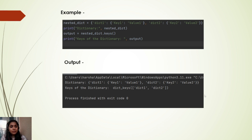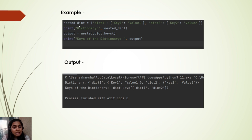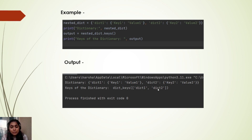We have another example: a dictionary of dictionaries — a nested dictionary. When we try to output the keys of this nested dictionary, we will be getting dict1 and dict2 as the keys, and not key1 and key2, since those are nested inside.